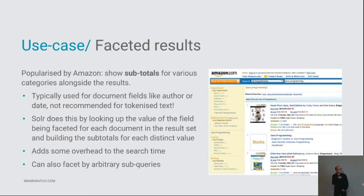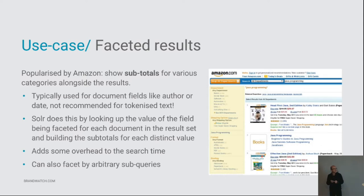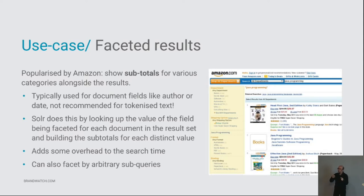You'd use faceting for non-text fields like categories, authors, or language. You wouldn't want to facet on the text itself — you'd just get a list of the most common words, which is typically quite boring. Solr does this because it's running through all the results anyway to rank them, and as it goes through it looks up the values of the field you're faceting on, buckets them up, and says I've got one for France, plus one for that, and so on. It adds a little overhead but with the right data structures in Lucene it's surprisingly quick.